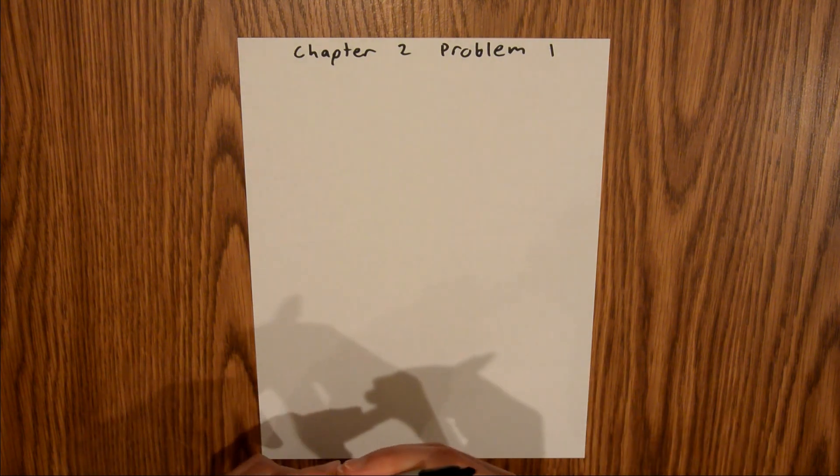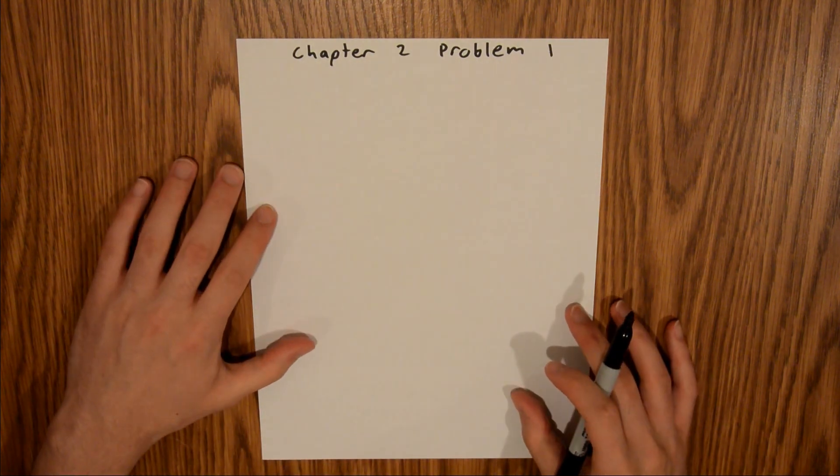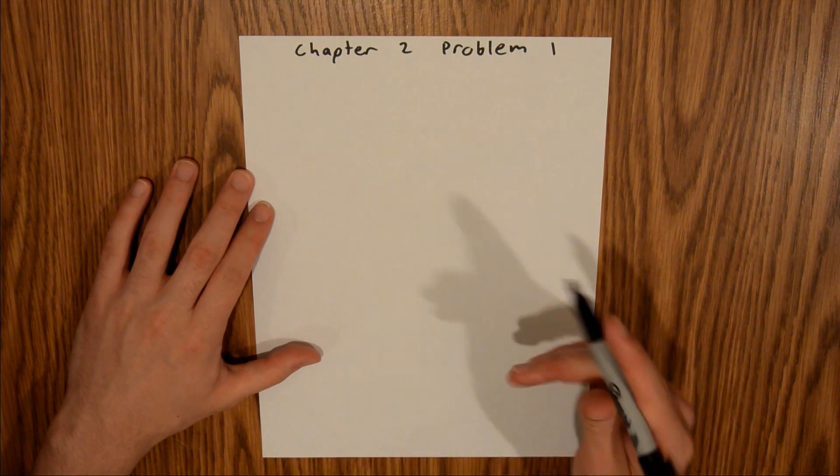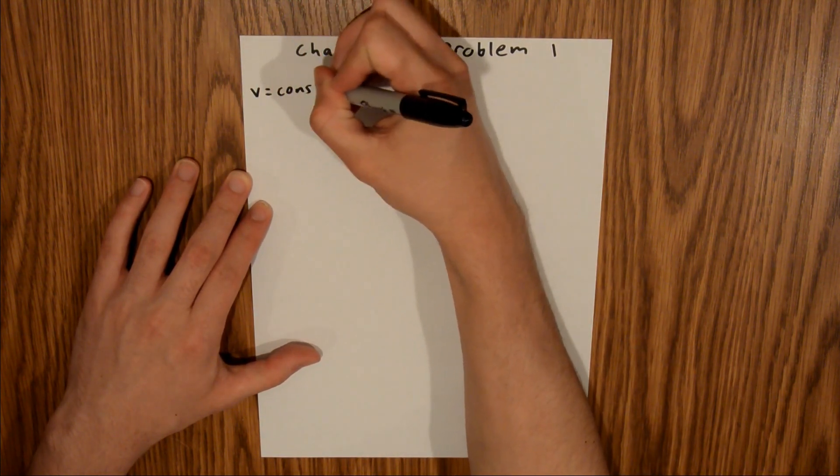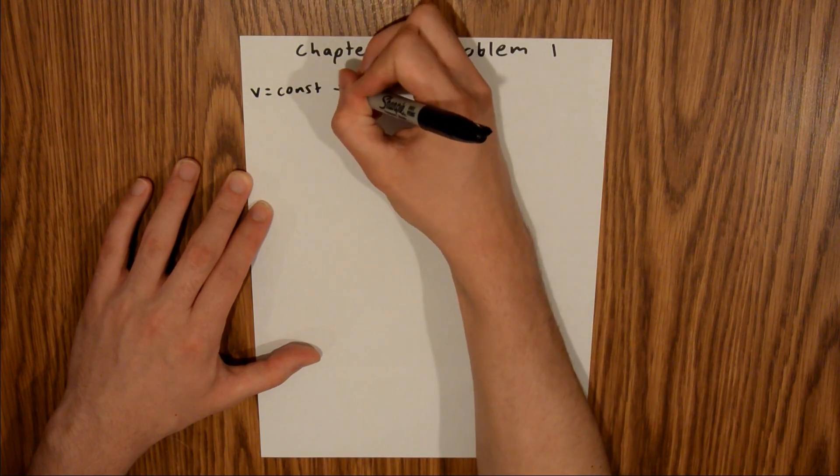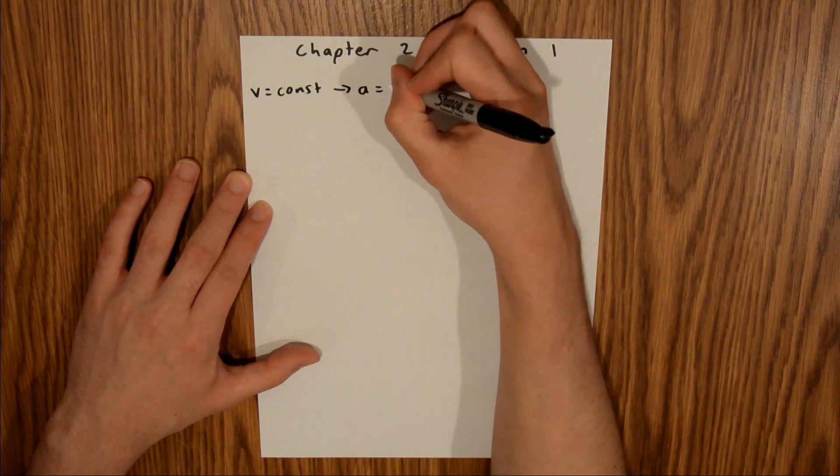Chapter 2 is all about motion along a straight line, and in Problem 1, we're asked to find how far you would move in a car if you shut your eyes for a specified amount of time. Since we're given a velocity that you are traveling, we know that your velocity is constant. And if velocity is constant, that means acceleration is equal to 0.